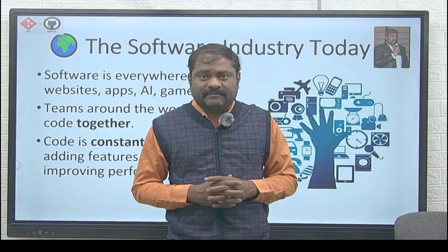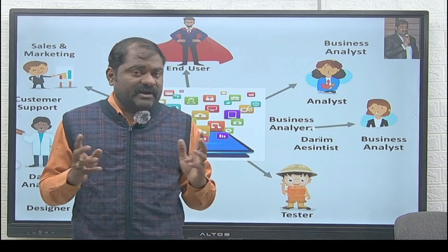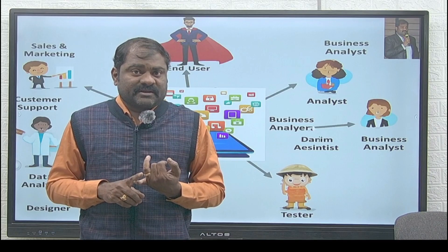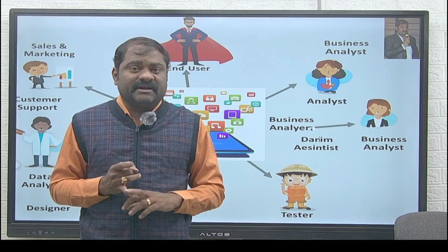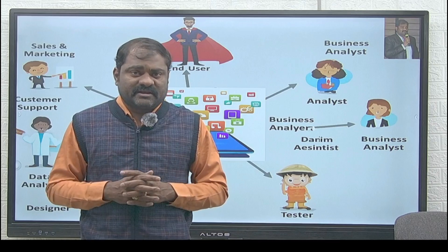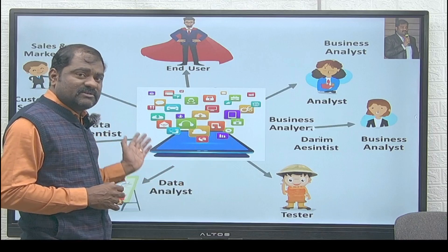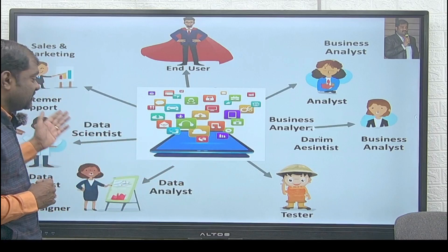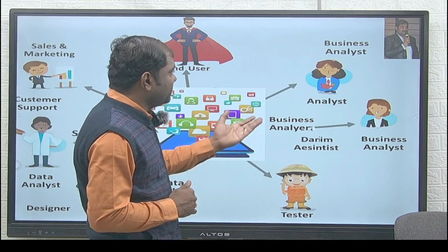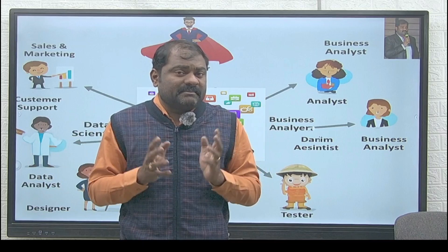Before entering the world of Git and GitHub, you must know the different roles available in the IT industry. Different people work in IT: developers, designers, testers, data analysts, business analysts, data scientists, and test engineers. Multiple roles exist and a lot of people work in the IT industry. A single person cannot develop a project — teamwork is required. Sales and marketing, customer support, data analysts, data scientists, designers, business analysts, developers, and testers are all involved in developing a project.